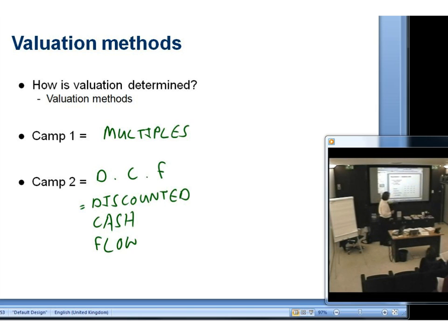What the bankers do is project the cash flows of the business year by year. They project the cash flows. Then they do something which is called discounting. Again, the clue's in the title. They discount those cash flows.